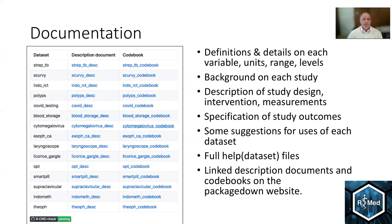The documentation of each data set is probably the most important part of this package. The definitions and details are available on each variable — units, range, and levels for each factor variable. There's background on each study, a description of the study design, intervention, and measurements, specification of the study outcomes, some suggestions for uses of each data set, and full help files, which you can get in R by typing help and the name of the data set.